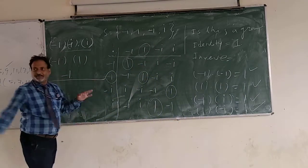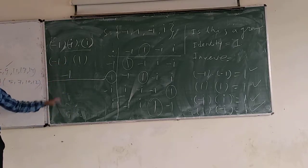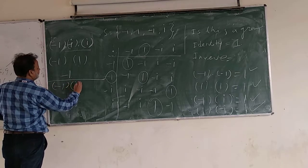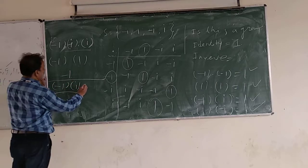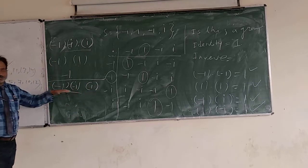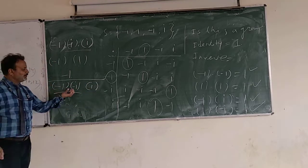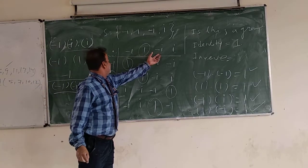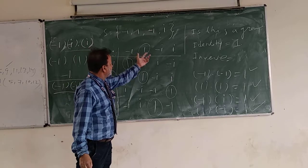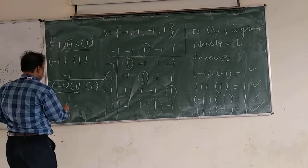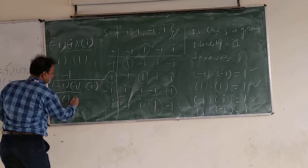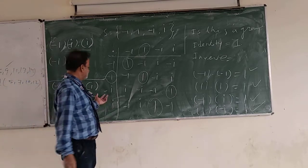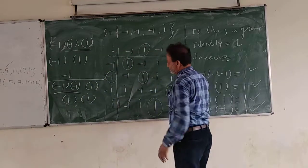Now perform it the other way round. We take minus 1 and minus i first: minus 1 product minus i gives i. So the result is i. Now i multiplied by i gives minus 1.